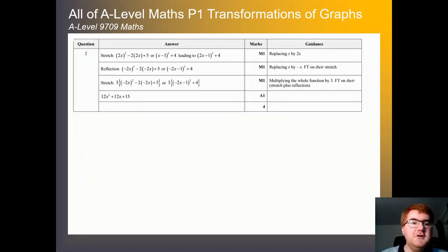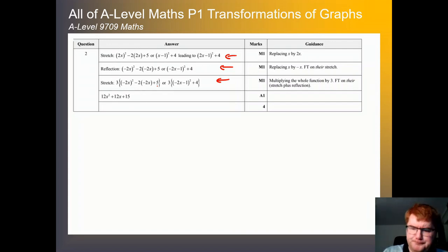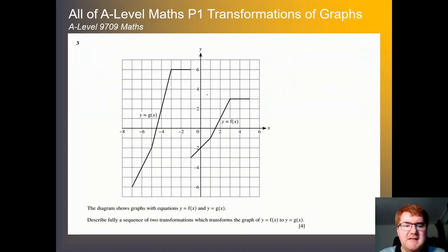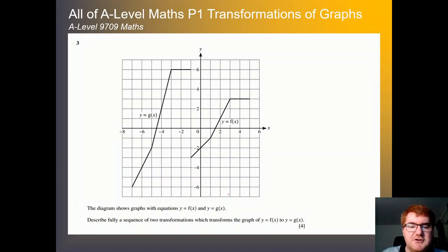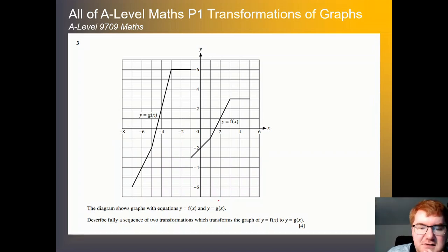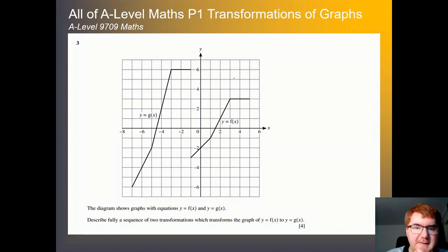You can go through the mark scheme here and see how we've broken this down. I think the way I did it is slightly less confusing than the way shown in the mark scheme. On to our next question. We have graphs showing y equals f of x and y equals g of x. Describe fully a sequence of two transformations which transforms the graph of y equals f of x to y equals g of x.